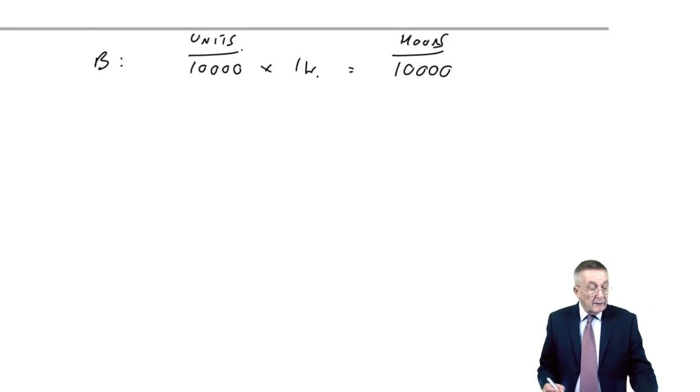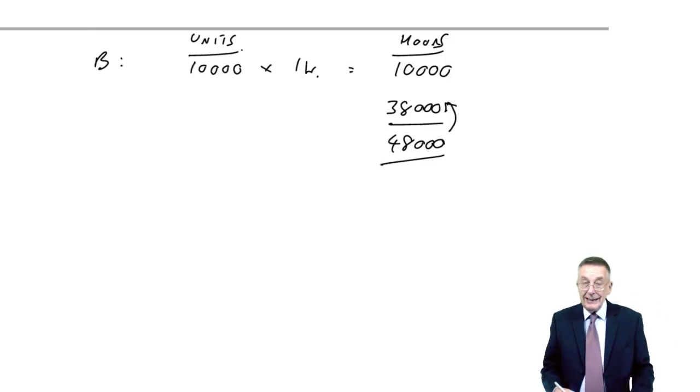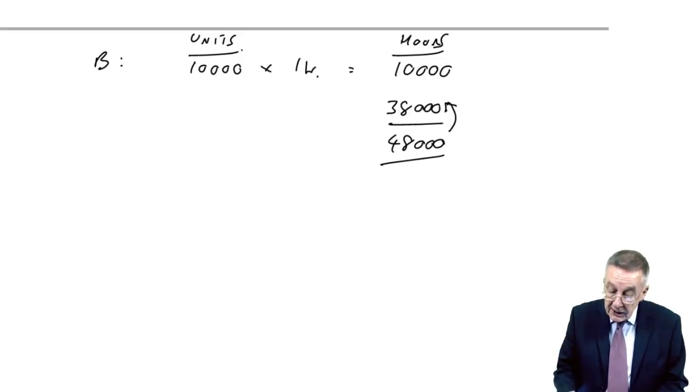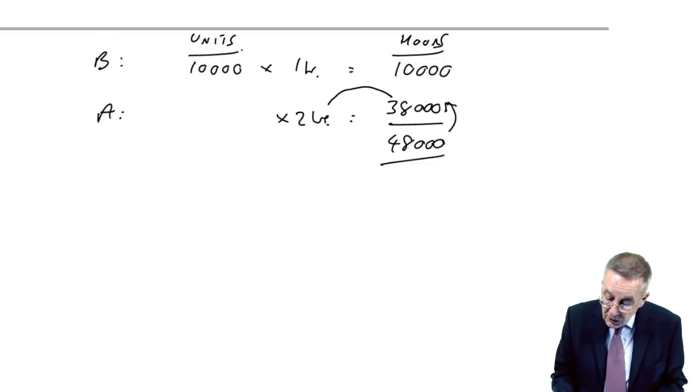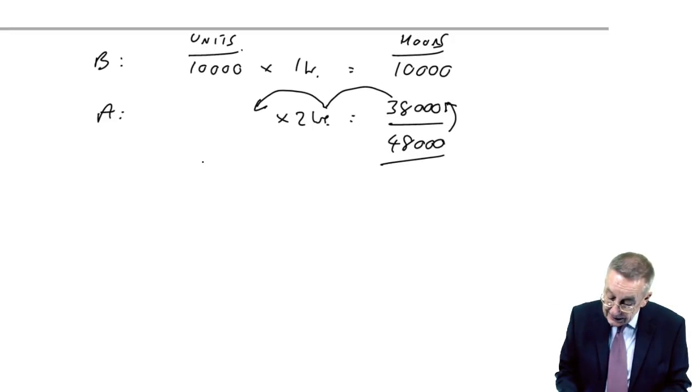How many hours have we got in total? We've got 48,000. So how many hours have we got left? If we've used 10,000 making B, the balance left is 38,000. Well, there's no point in making more B's. So we've used the remaining hours to make A. And how many can we make? Remember, each takes two hours. So with 38,000 divided by two hours, we can make 19,000 units.